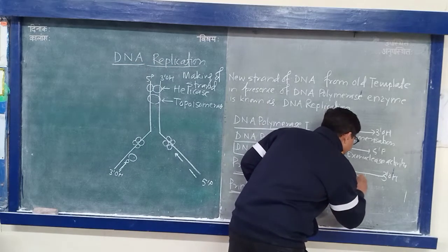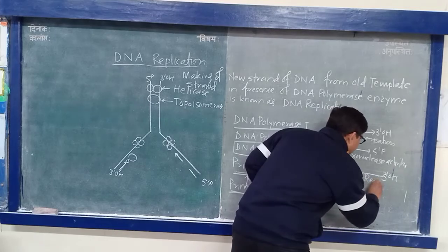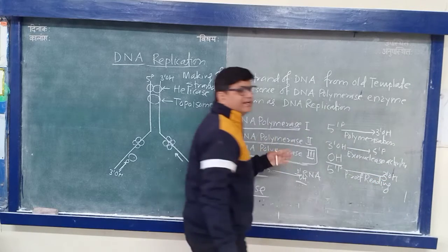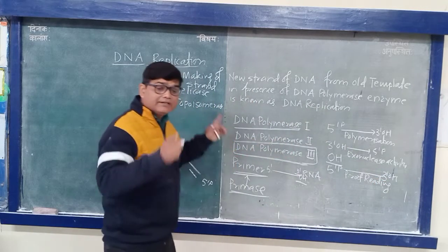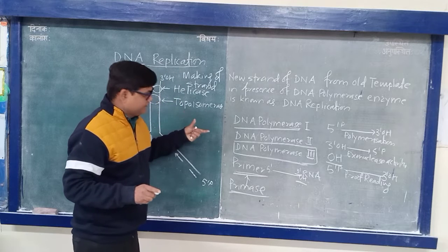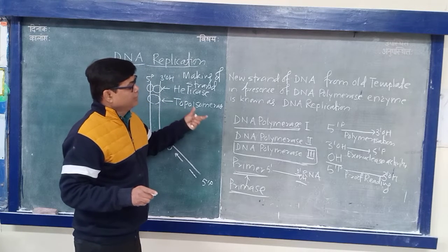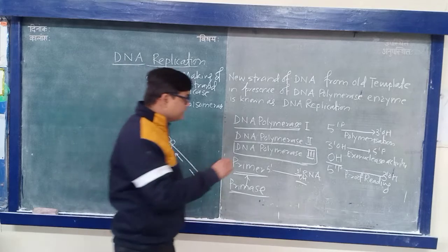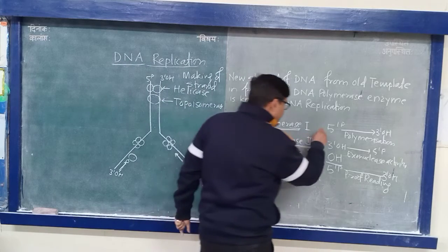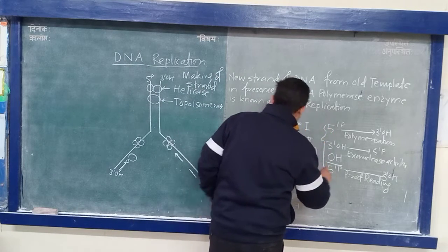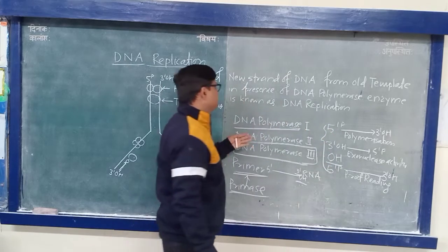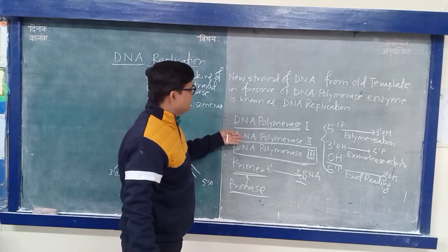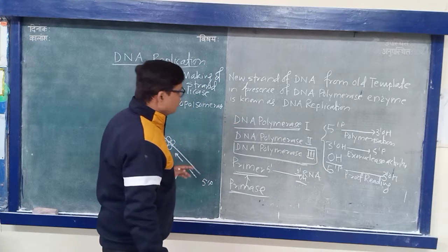Proofreading activity means checking whether the correct nucleotide is going to be added in the case of new DNA or not. So these three activities must be present in each type of DNA Polymerase 1, 2, and 3.